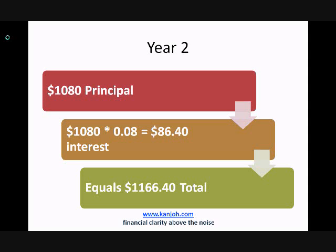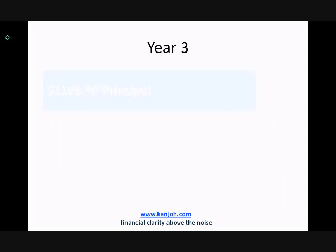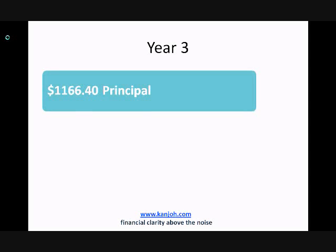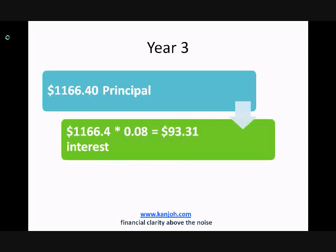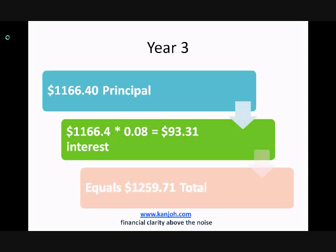Let's now move on to year three. In year three, we start with $1,166.40 in principal. We multiply that by 8%, and we get $93.31 in interest. So again, we've earned more interest than we did in year two — the money has compounded — and when we add these numbers together, we get a total of $1,259.71.